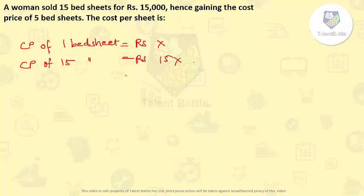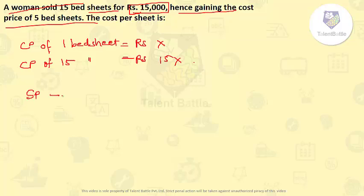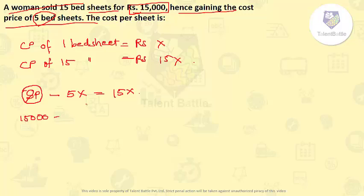They have told that a woman sold 15 bedsheets for Rs 15,000, hence gaining the cost price of 5 bedsheets. So if we subtract the total selling price and the profit — that is 5X, because she has earned the price of 5 bedsheets — we will be getting 15X, the cost price of 15 bedsheets. So: 15,000 minus 5X equals 15X.